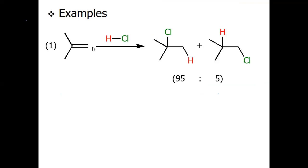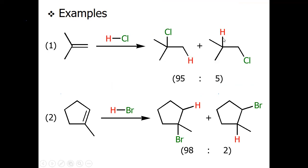Another example: with 2-methylpropene and HCl, two isomers form — one from the most stable carbocation and one from the less stable carbocation. The major yield comes from the most stable carbocation. In a second example, a cyclopentene methyl derivative reacts with HBr to give two products: one major product due to Markovnikov selectivity and one minor product.